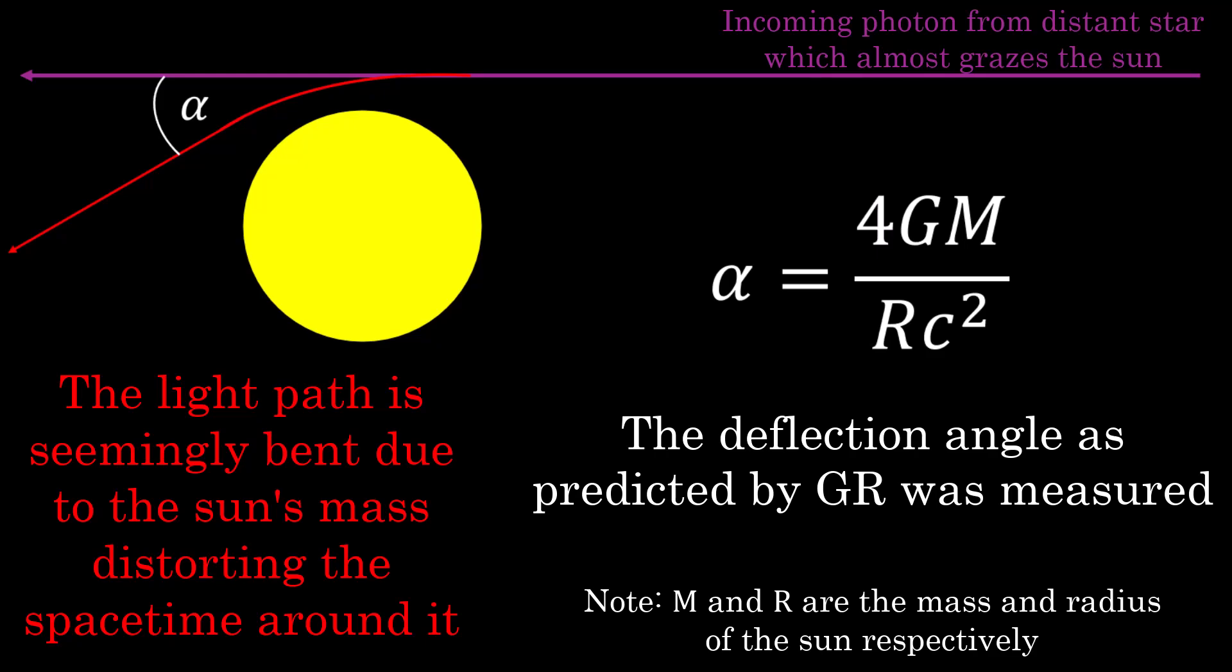This showed that GR was not just capable of explaining pre-existing problems such as the precession in the orbit of Mercury, but also able to suggest new experiments and derive results. Of course, not many people decided looking at the Sun to look for the deflection of starlight was a good idea before Einstein came along.